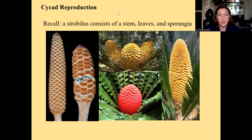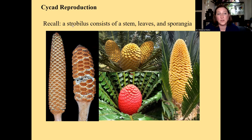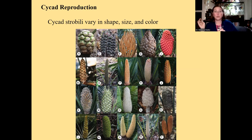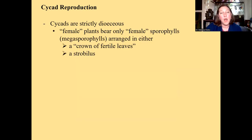Here on the left are two strobili. Cycad strobili look really different from each other — sometimes different colors, different sizes, and different shapes — but we still call them strobili, and they still consist of a stem, leaves, and sporangia. Cycad strobili can be all different colors, shapes, and sizes depending on the species — very pretty actually.